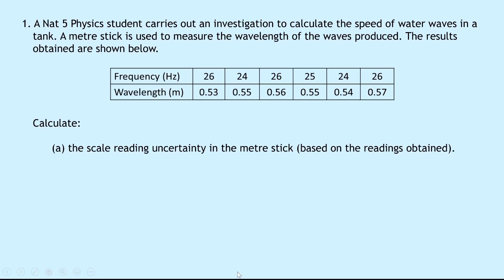So our long exam style question says that a Nat 5 physics student carries out an investigation to calculate the speed of water waves in a tank. A meter stick is used to measure the wavelength of the waves produced. The results obtained are shown below. So we've got this table, frequency in hertz, and wavelength in meters, and we've got 1, 2, 3, 4, 5, 6 sets of results for each.